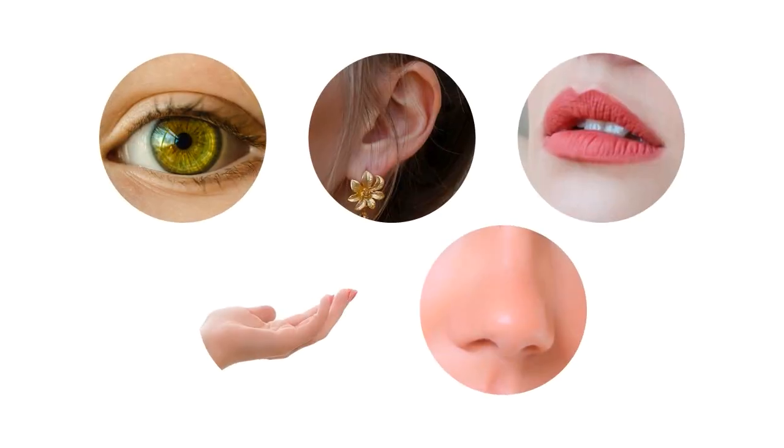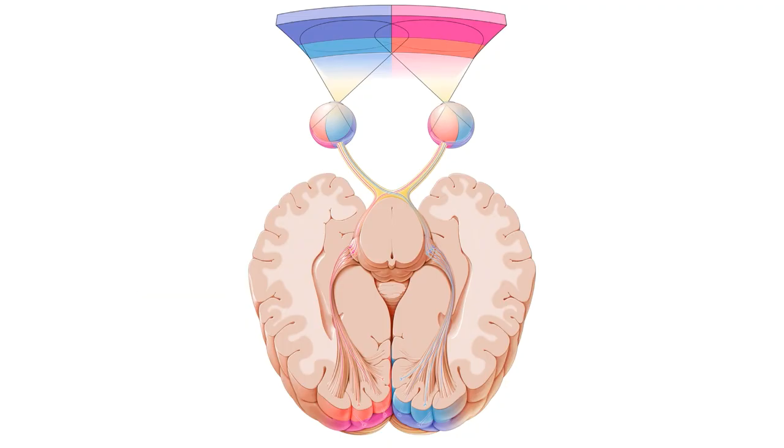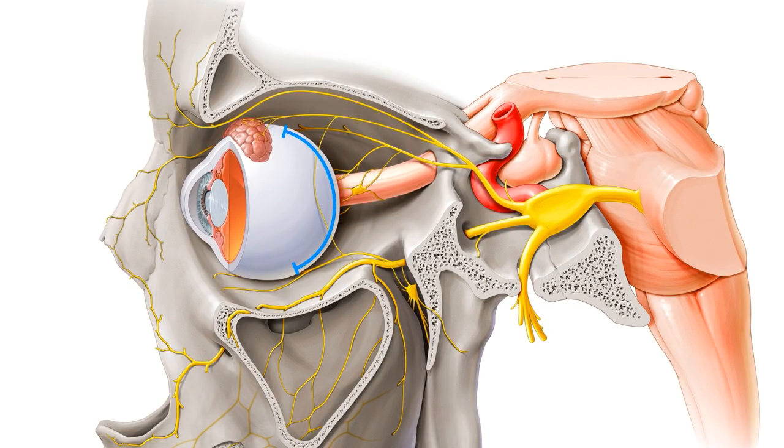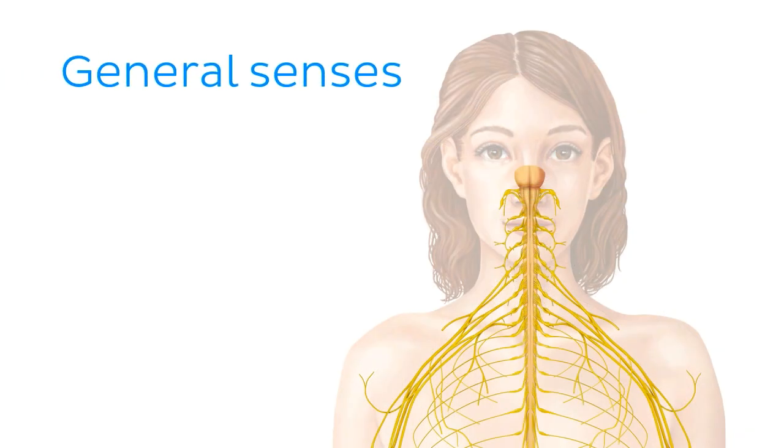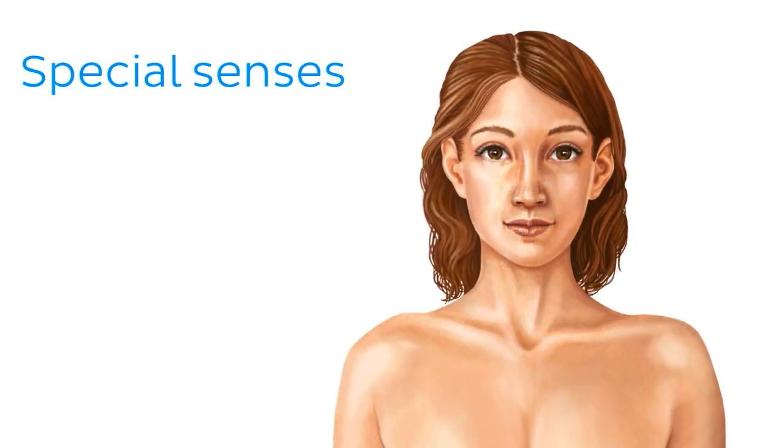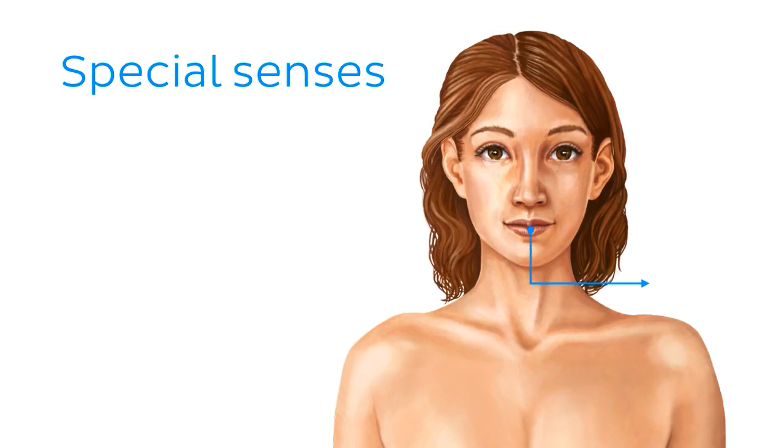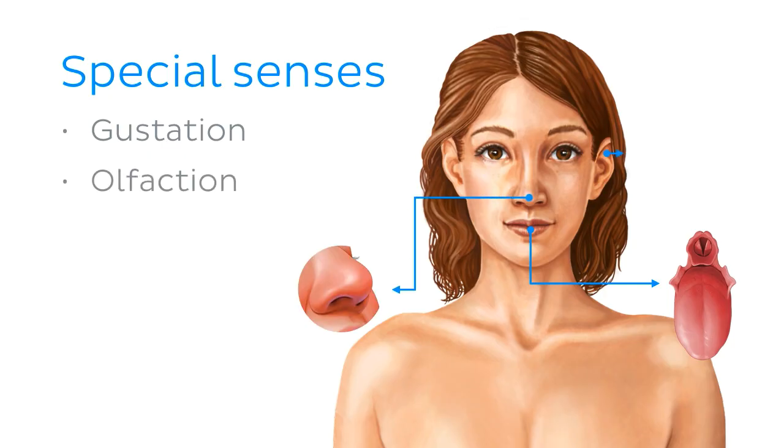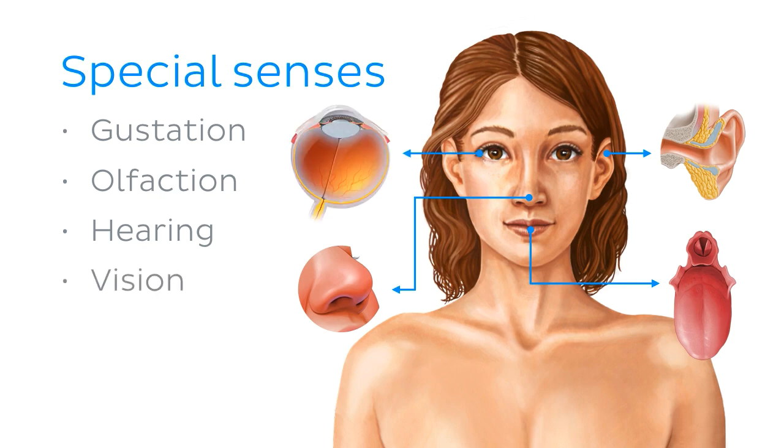And the last thing I want to briefly discuss is the terminology related to the senses. As you know, the sensory network is a part of the nervous system, which detects stimuli from internal and external environments. The signals are generated in various receptors of the sensory system and then processed by the nervous system. The general senses are received from across the body and include pain, touch or tactility, pressure, temperature, and proprioception, which is the awareness of body position. The special senses are received from dedicated sense organs. For example, gustation or taste is sensed by the taste buds of the tongue. Olfaction or smell is located in the nose, hearing from the ears, and vision from the eyes.